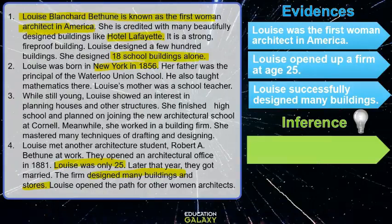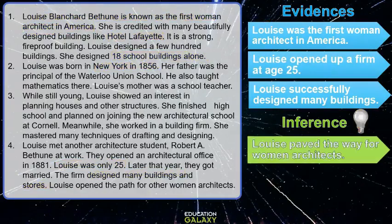What is an inference we can make based on these three evidences? The light bulb has gone off! The inference is: Louise paved the way for women architects. She made it possible for other women architects to be successful and to feel like they can also do it. Because she was the first woman architect, she opened a firm at age 25, and she designed many buildings successfully — she paved the way.